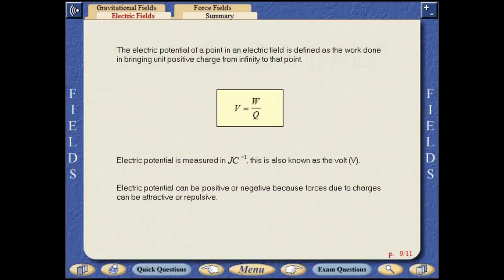The electric potential of a point in an electric field is defined as the work done in bringing unit positive charge from infinity to that point. Electric potential is measured in joules per coulomb or volts.